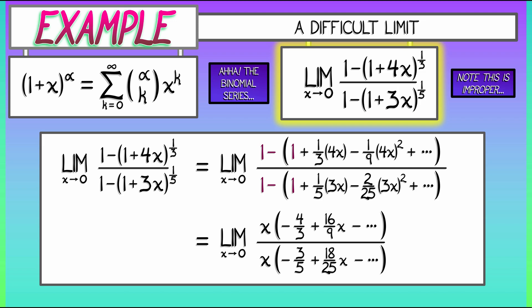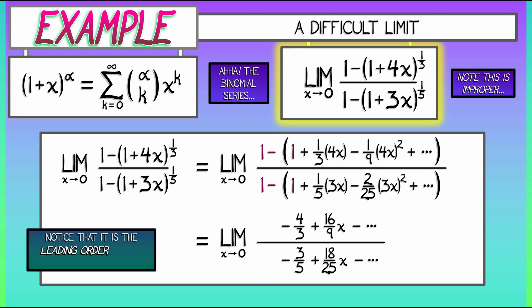Now, notice that when we cancel out those x's and try to evaluate at x equals zero, then it's the leading order terms that matter. Everything that's a higher order term, it's vanishing. It's going away. The only thing that matters is those leading order terms.